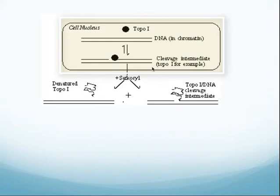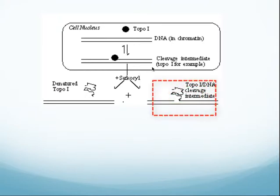Imagine that inside the cell, topo-1 is binding DNA and inducing the single-strand nicks and then resealing. This is the typical equilibrium reaction of cleavage and re-ligation. Now in this particular case, if you flood the system with sarkosyl, you'll immediately lyse the cells, and this will result in freeing the DNA and generating these topo-DNA cleavage intermediates.